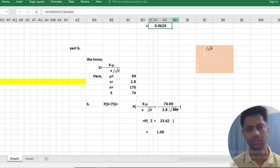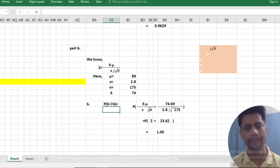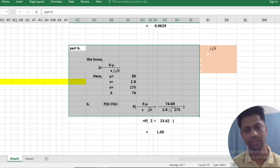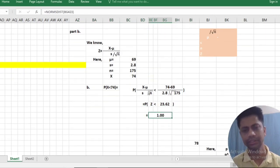Part B solution: This is also 74. We know that mean is 69 and standard deviation is 2.8. By using this formula, I have calculated this.